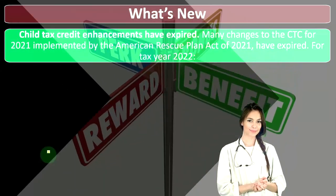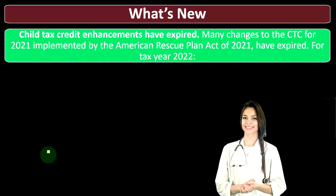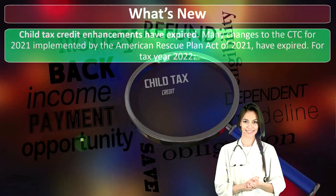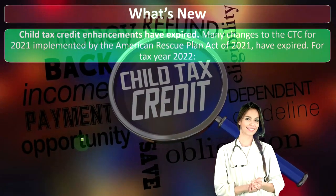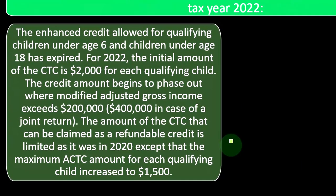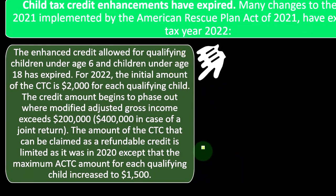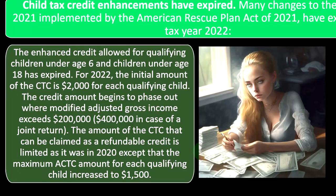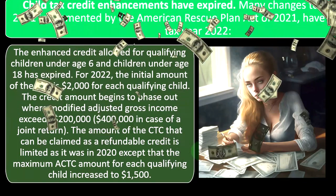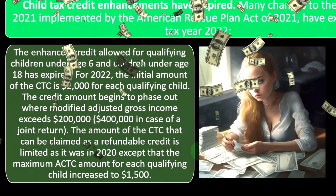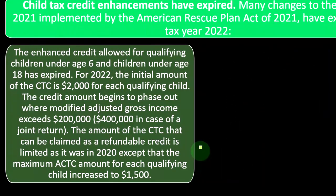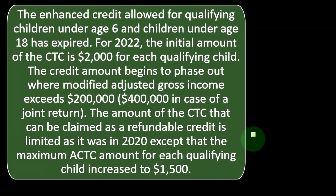Child tax credit enhancements have expired. Many changes to the CTC implemented by the American Rescue Plan Act of 2021 have expired for tax year 2022. The enhancement allowing credit for qualifying children under age 6 and under age 18 has expired. For 2022, the initial CTC amount is $2,000 for each qualifying child. The credit begins to phase out where modified adjusted gross income exceeds $200,000, or $400,000 in the case of a joint return.